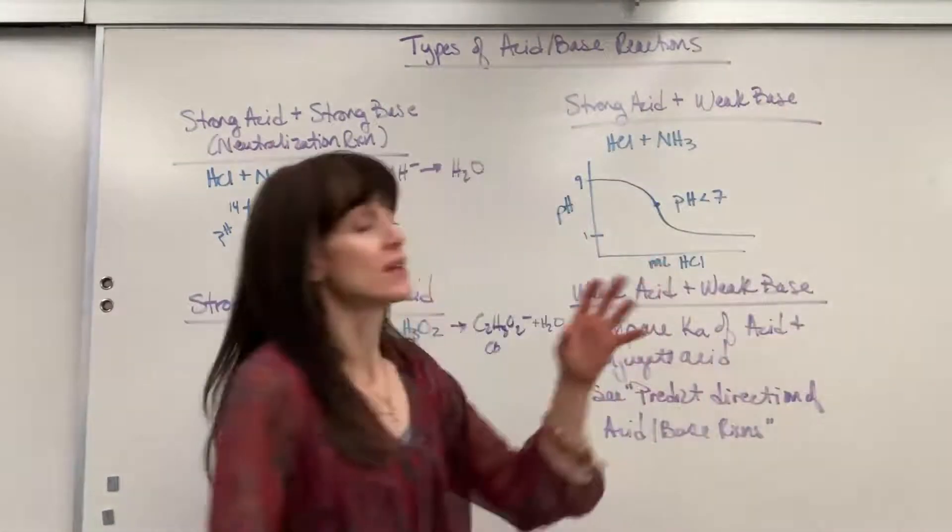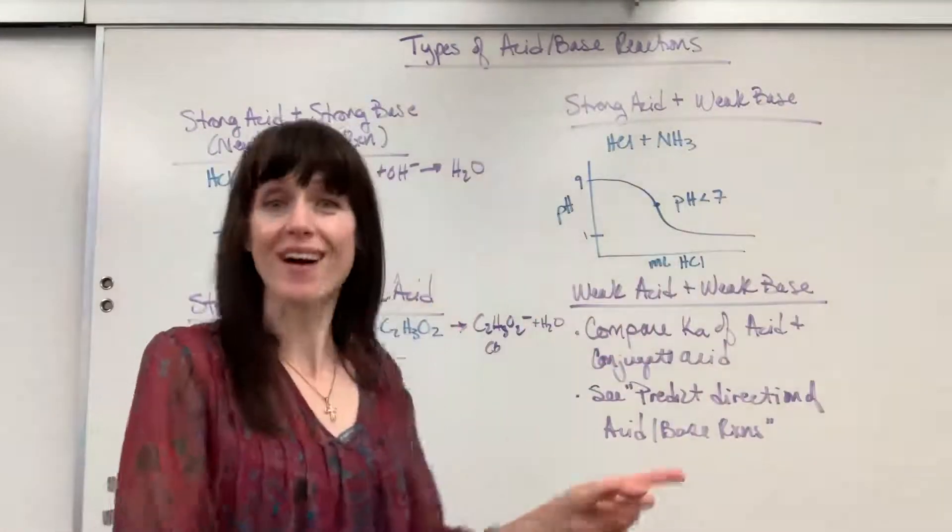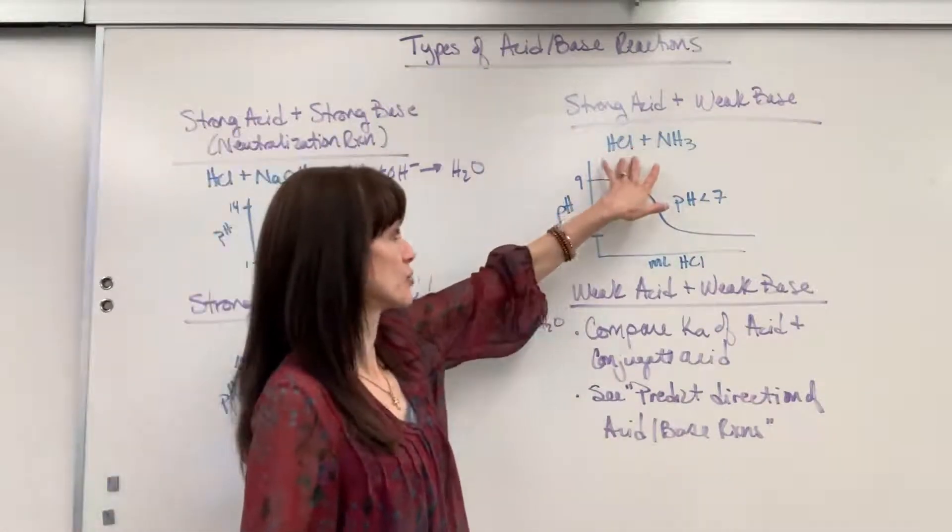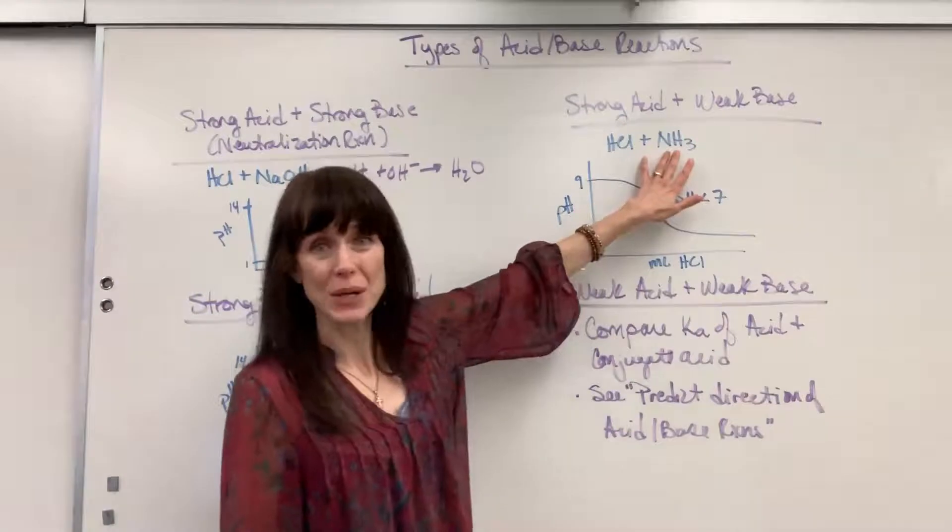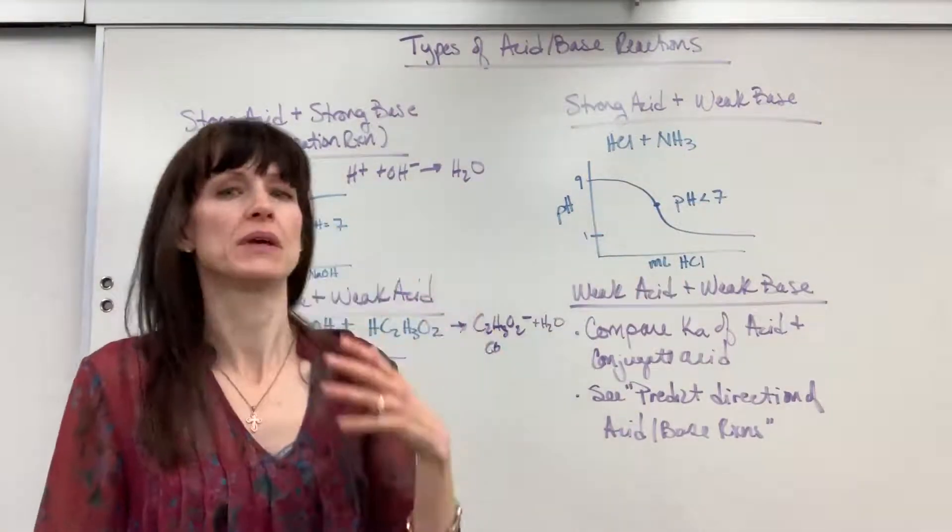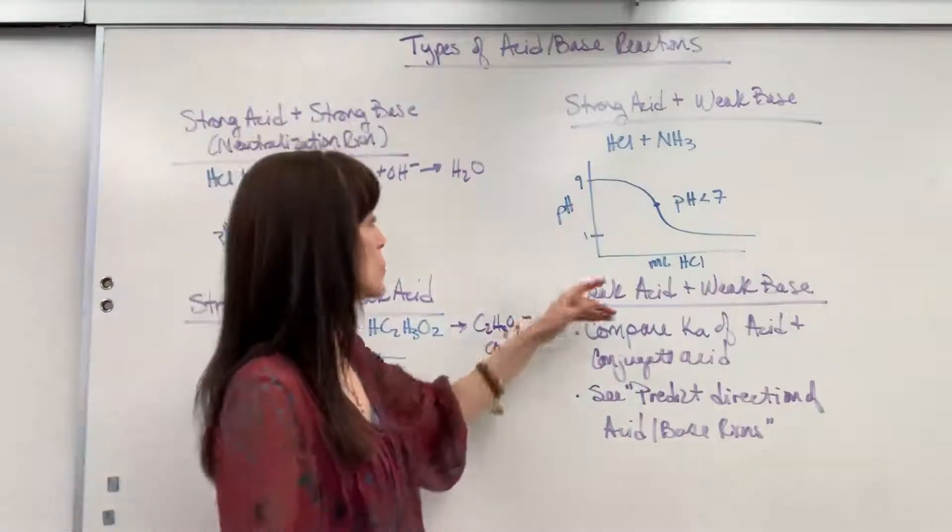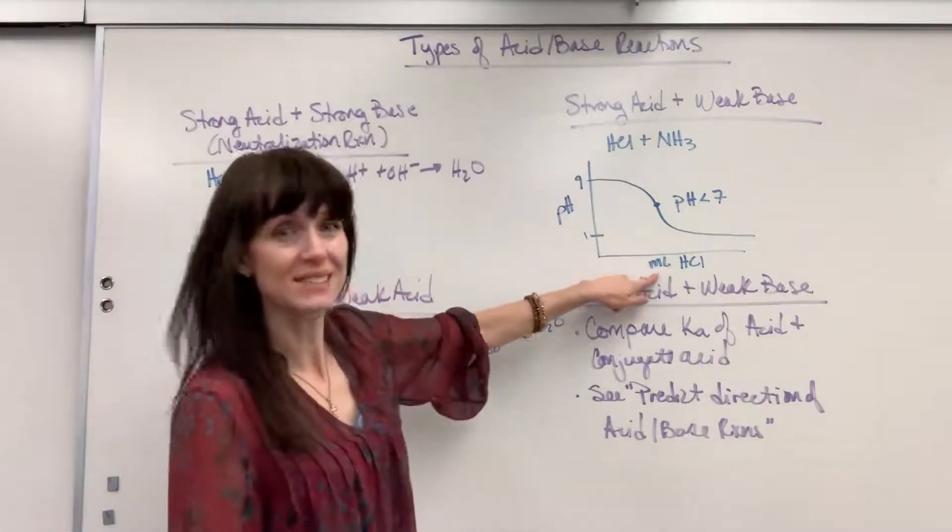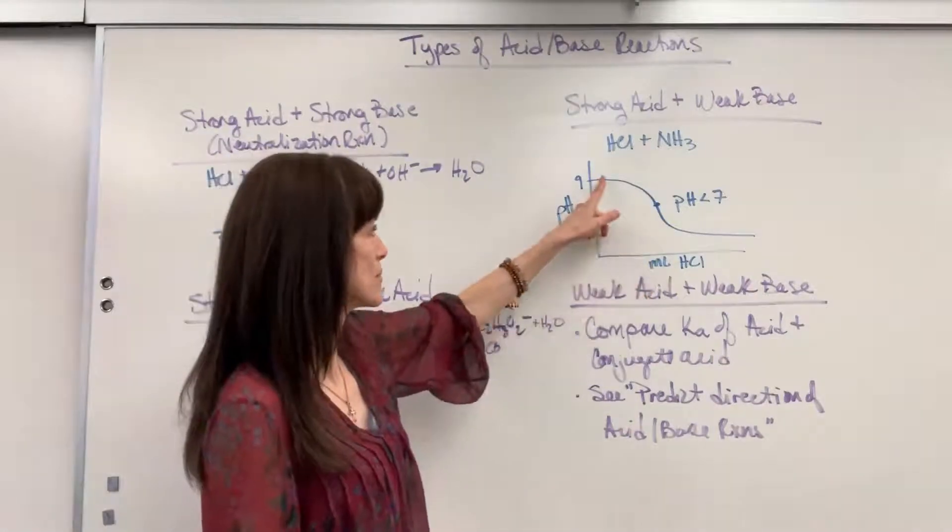Okay, let's look at another one. Let's flip it now. Let's do a strong acid with a weak base. So we're going to have hydrochloric acid, strong, strong acid with a weak base, ammonia. So we're going to start with our ammonia. It's a weak base, so its pH would be about a 9. We have this pH of 9, start adding the mils of the HCl, that strong acid.